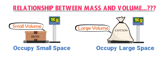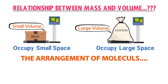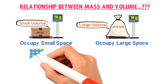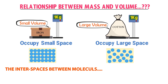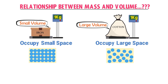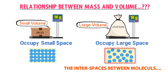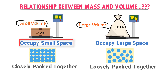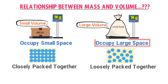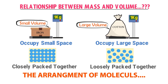To solve this mass and volume puzzle, you must learn the arrangement of molecules or atoms in iron and in cotton. The molecules of iron are closely packed together in a uniform pattern, while the molecules of cotton are loosely packed together in a very non-uniform way. The interspaces or distance among the molecules of iron is very small, while the interspaces among the molecules of cotton is large. Therefore iron occupies small space and has small volume, while cotton occupies large space and has large volume. Thus the relationship between mass and volume depends upon the arrangement of atoms in a substance.